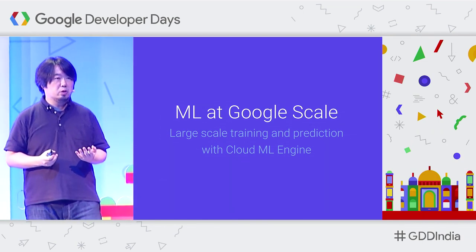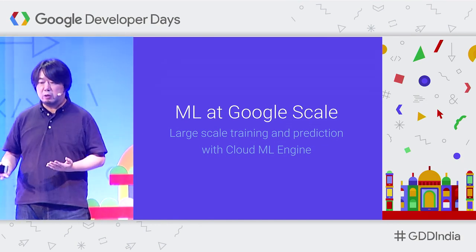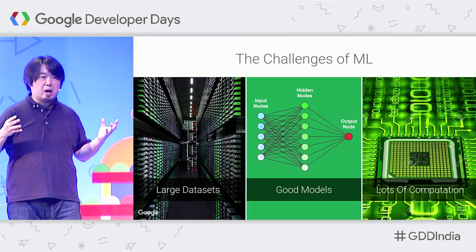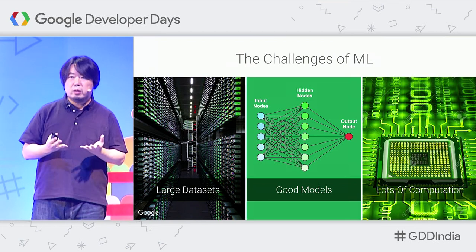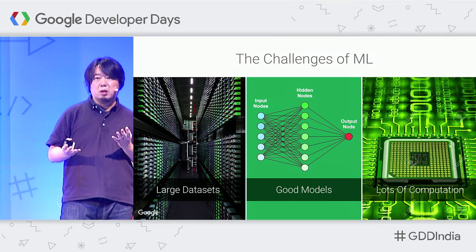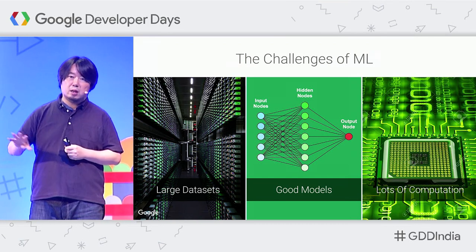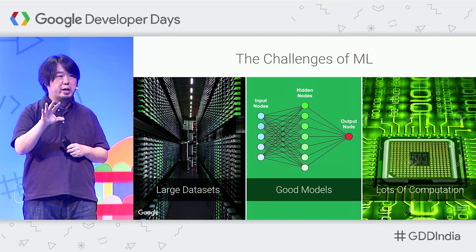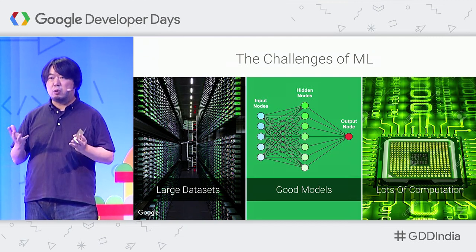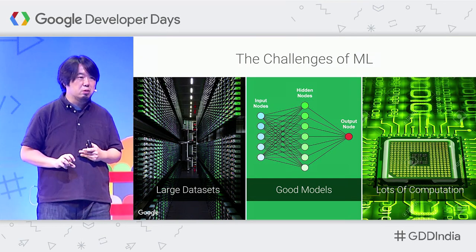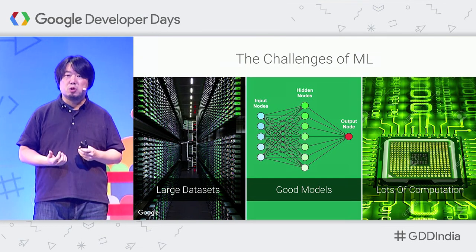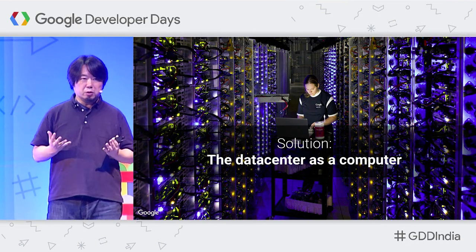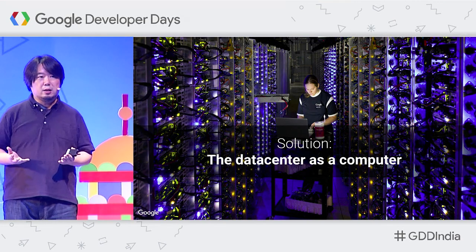That reflects the booming TensorFlow community and ecosystem. But if you want to bring TensorFlow into production for your own enterprise problem, there are some challenges. You need a large training data set — that's one of the downsides of deep learning. You need to build a good model, sometimes hiring data scientists. And the largest challenge is the massive computation — you need more and more GPUs to do large-scale distributed training.